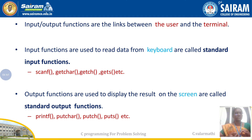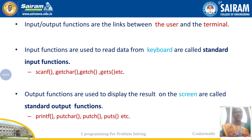Each function has a special logic behind it. scanf is used for reading values; getchar is used for reading a single character, and getch is similar. gets is used to read a single line from the keyboard. Similarly, displaying a result on screen is called a standard output function. Examples of standard output functions are: printf, putchar, putch, and puts.